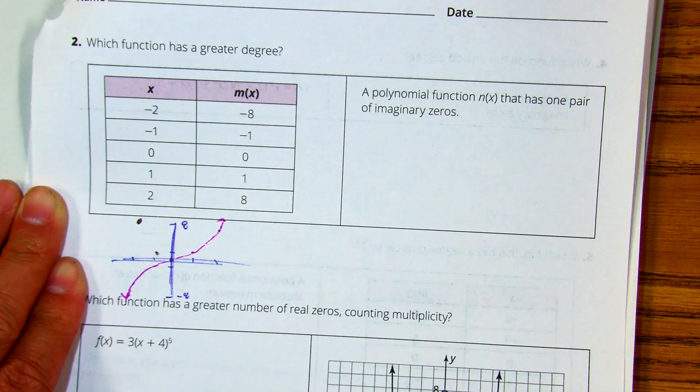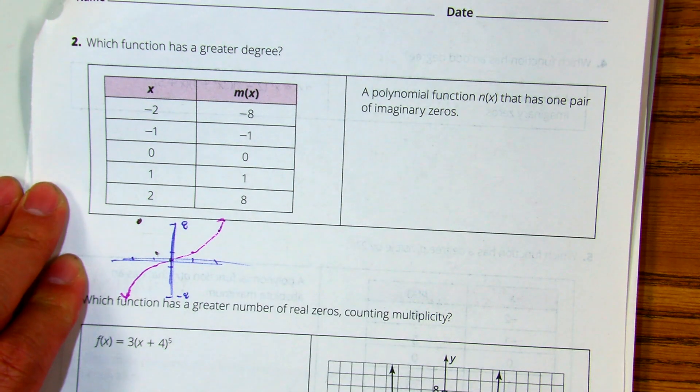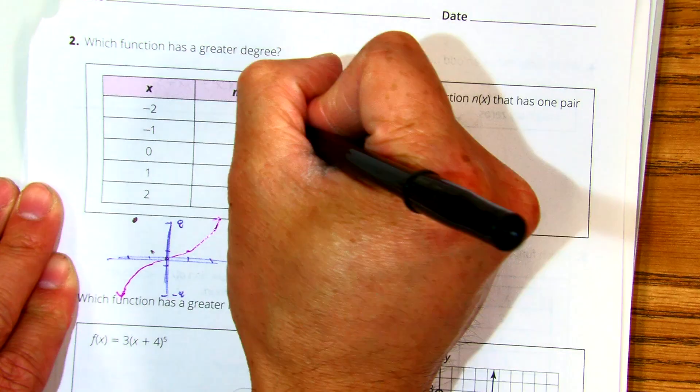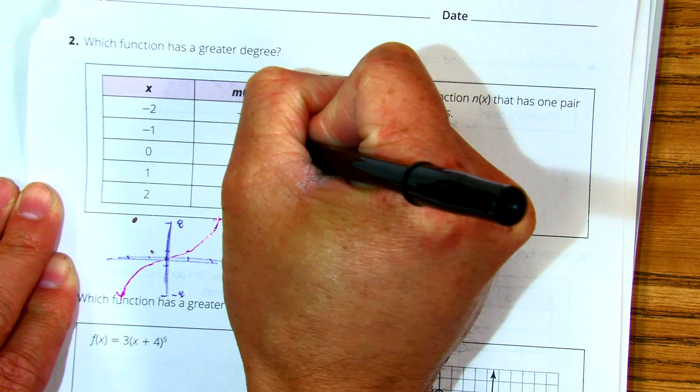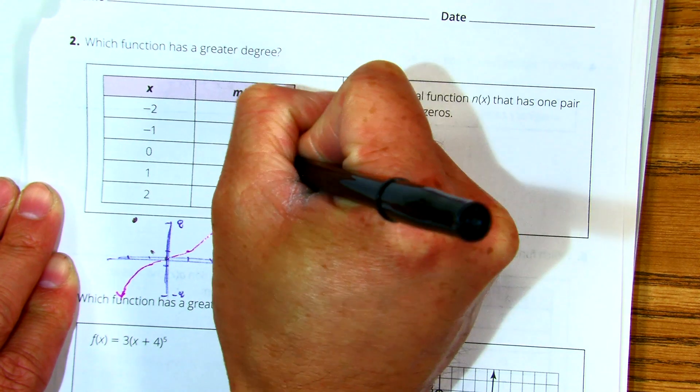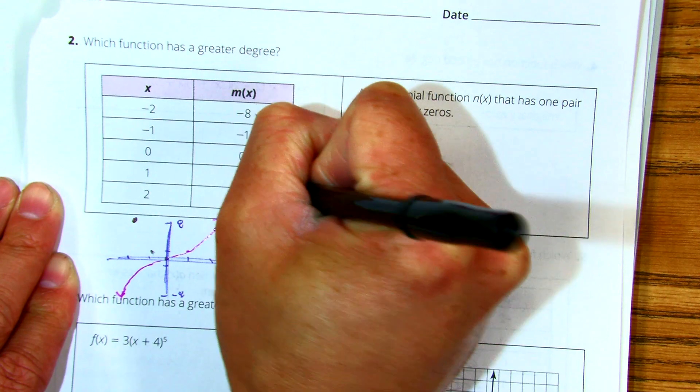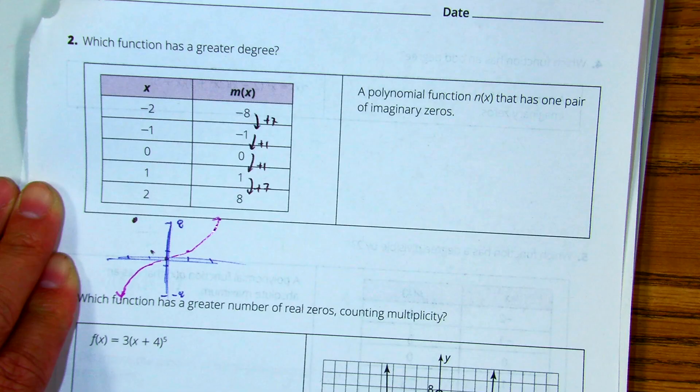But let's confirm that using our common difference. Here to here, I have plus seven, plus one, plus one, plus seven. Classes, do we have a first common difference? Is it linear?